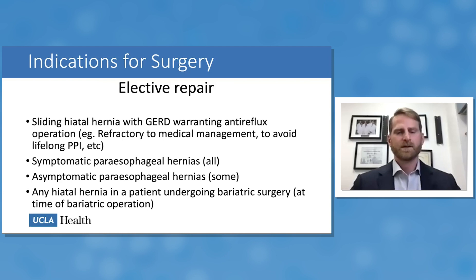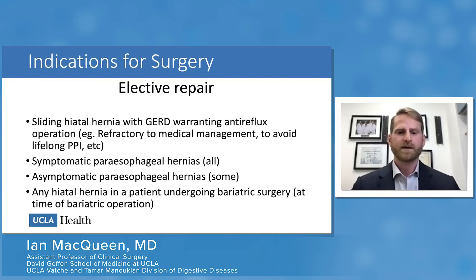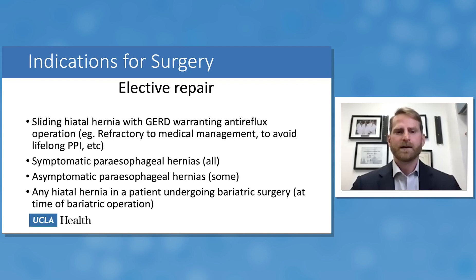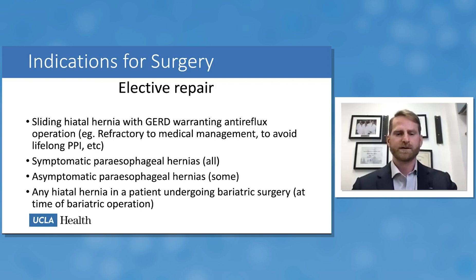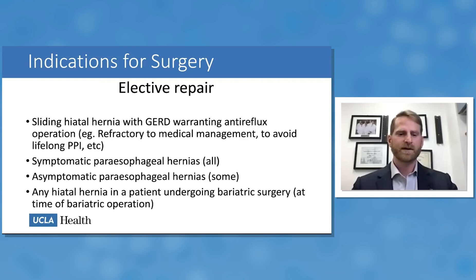Elective repair is appropriate for four main groups: sliding hiatal hernias with GERD where GERD warrants an anti-reflux operation, all symptomatic paraesophageal hernias, some asymptomatic paraesophageal hernias, and patients undergoing bariatric surgery. For bariatric patients — those having gastric sleeve or bypass operations — if a hiatal hernia is present it should be fixed at the time of surgery since the surgeon is already operating on the foregut.